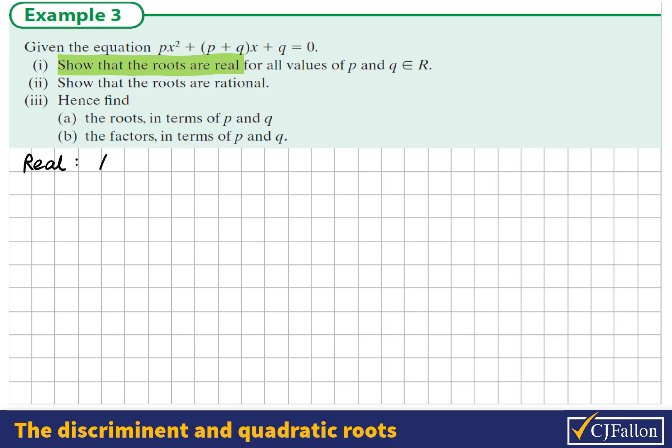If the roots are real, it's because the discriminant, that is b² - 4ac, is not negative. It could be greater than or equal to 0.